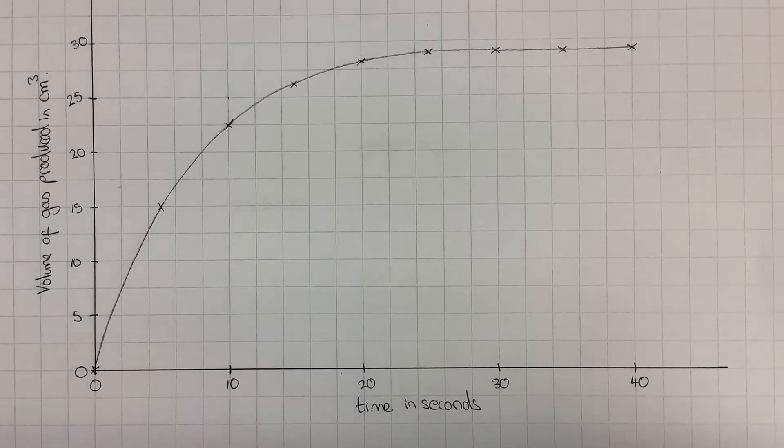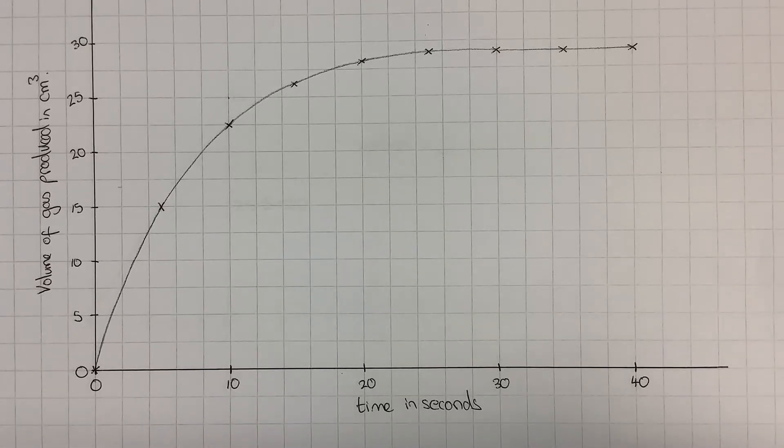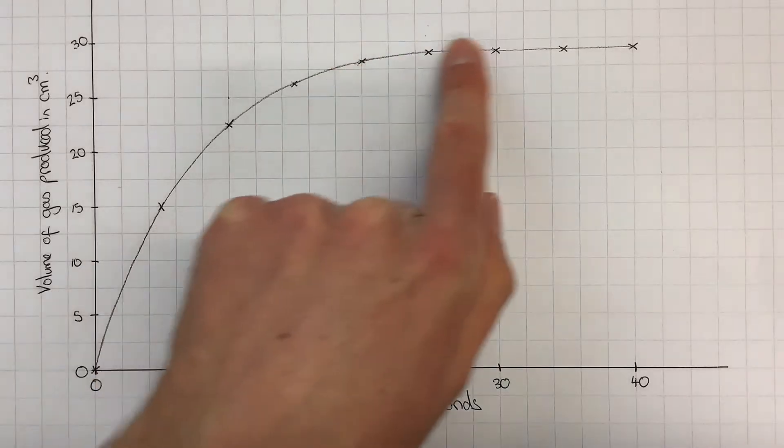In this video we're going to look at how we can find the rate of reaction from a graph. We can see from this graph that the rate of reaction is changing because the gradient is changing.